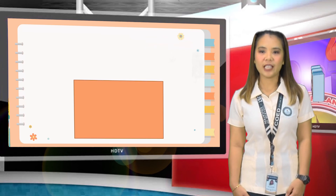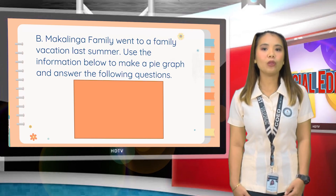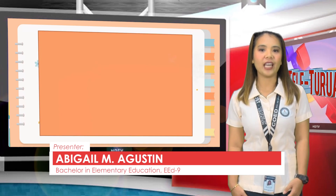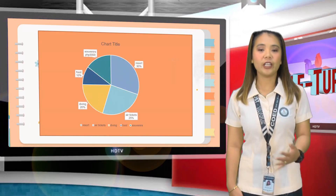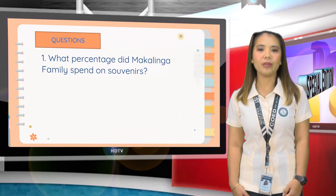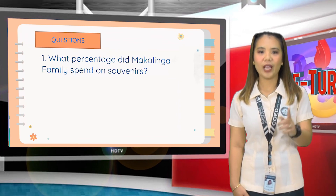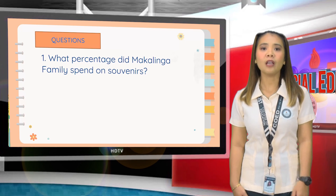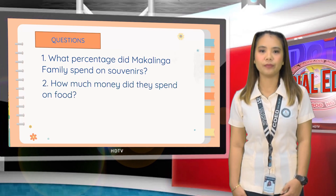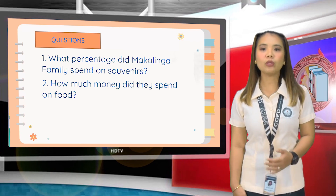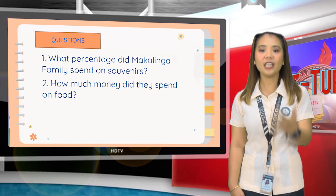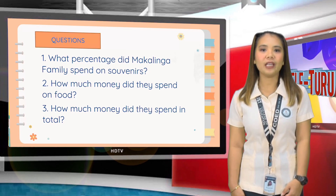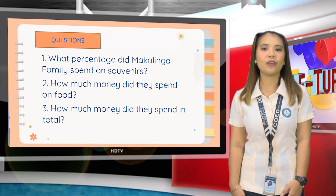Let us move on to the second problem. The Makalinga family went on a family vacation last summer. Use the information below to analyze the pie graph and answer the following questions. What percentage did the Makalinga family spend on souvenirs? 15% was spent by the Makalinga family for their souvenirs. How much money did they spend on food? They spent 2,000 pesos for their food. How much money did they spend in total? The Makalinga family spent 20,000 pesos for their family vacation.